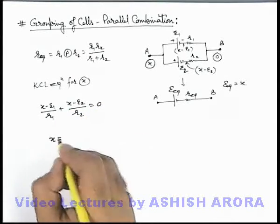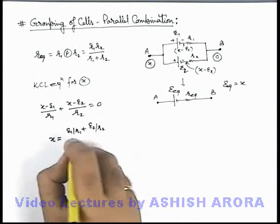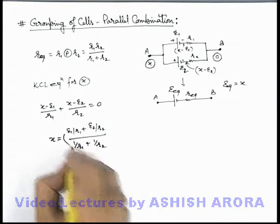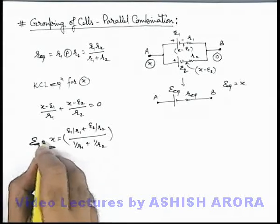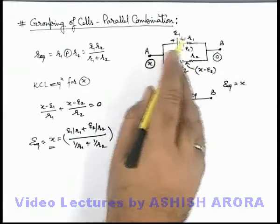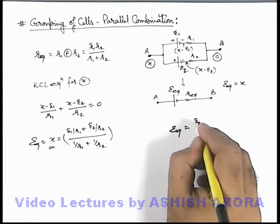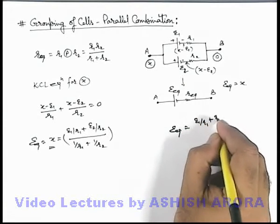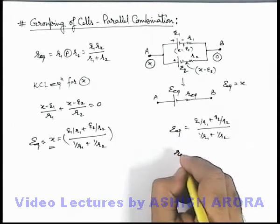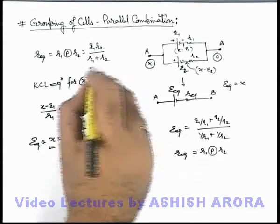On solving we are getting the value of x is equal to (e1/r1 + e2/r2)/(1/r1 + 1/r2). So this can be considered as the equivalent. Here we can write the value of e_equivalent will be (e1/r1 + e2/r2)/(1/r1 + 1/r2), and r_equivalent we can directly write as r1 in parallel combination with r2, which we already obtained.